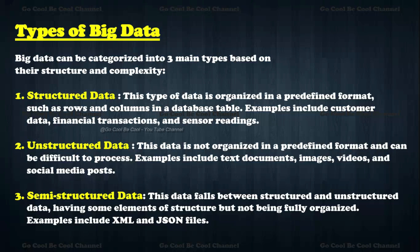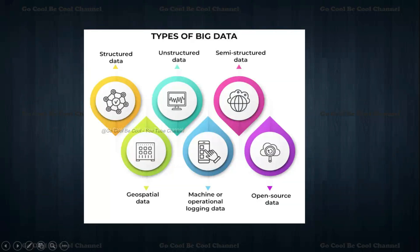Semi-structured data falls between structured and unstructured data — it has some elements of structure but is not fully organized. Examples include XML and JSON files. This is what we can see in coding — with greater-than symbols, apostrophes, and similar markup. Structured data is very easy to understand, whereas semi-structured data has some predictable elements but is still difficult to fully interpret in some areas.